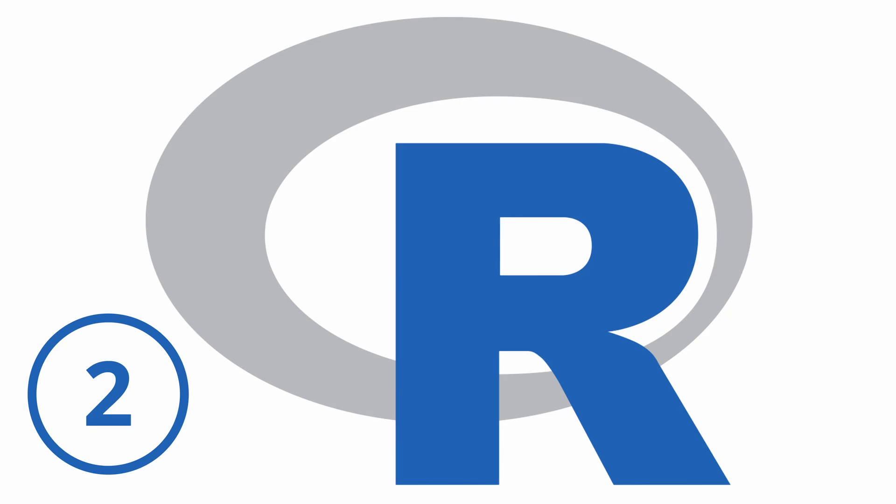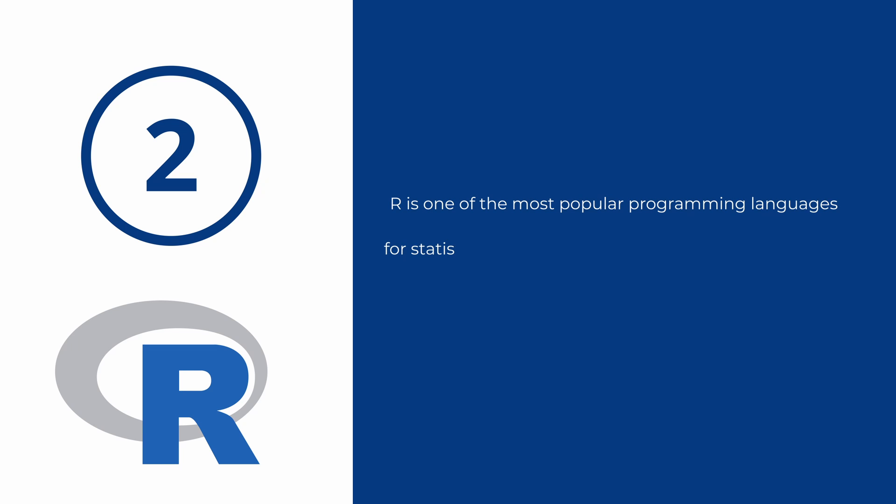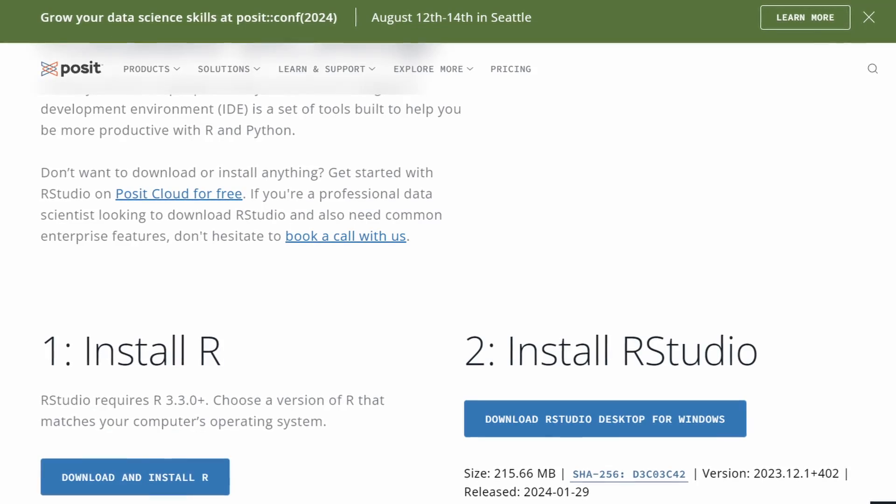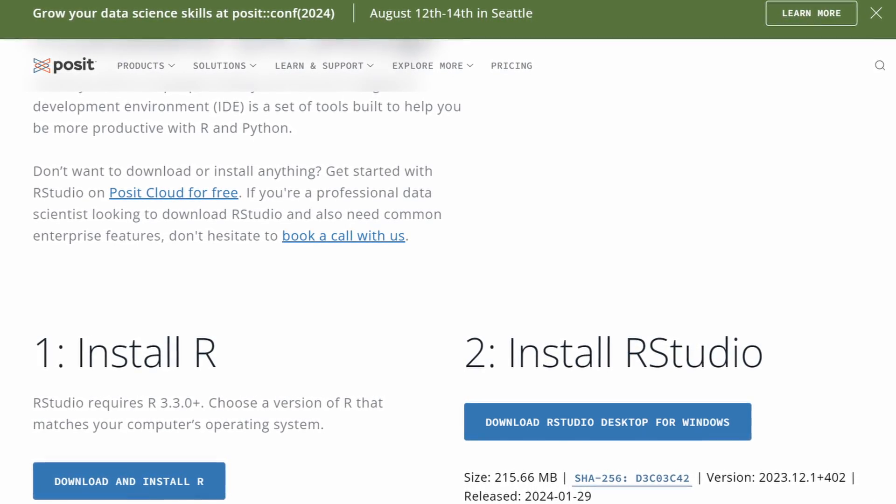Sitting in second position is R-based tools. R is one of the most popular programming languages for statistical modeling, visualization, and data analysis. It is open-source and specializes in statistical analysis, offering a comprehensive ecosystem of packages. It is excellent for data visualization with packages such as ggplot2, Lattice, Plotly, and others. RStudio is the popular integrated development environment for R-based programming. R is generally free and can be downloaded from its official website. It is best for statistical modeling and hypothesis testing.